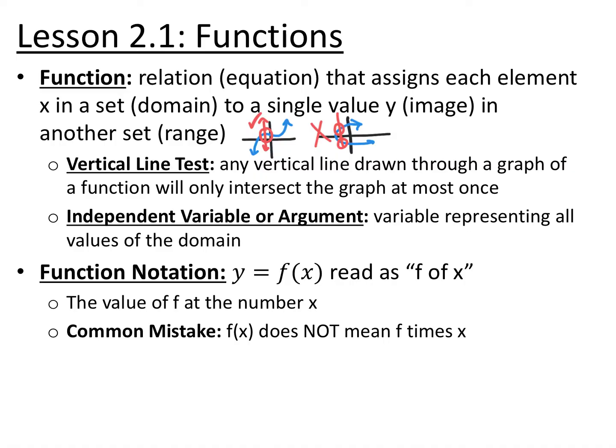A tool we have to test whether something is a function is the vertical line test. If you have a graph of a relation and you draw a vertical line anywhere on the graph, and it intersects the graph more than once, it is not a function — that x coordinate would have two different y coordinates. If it only ever intersects in one spot, then it is a function.